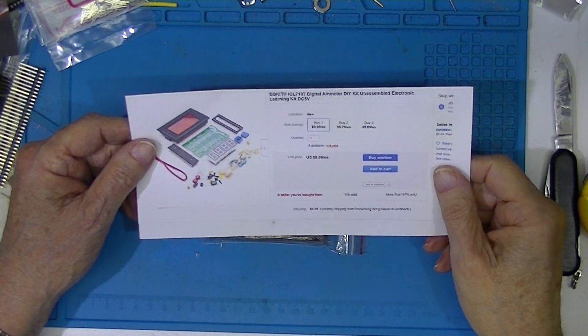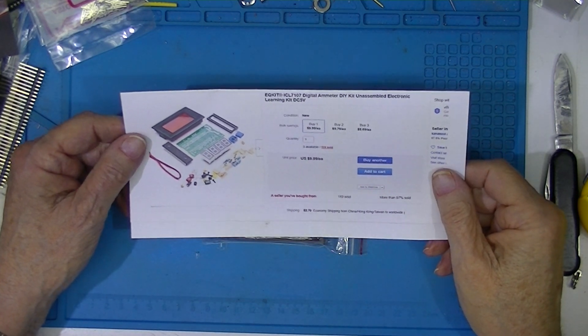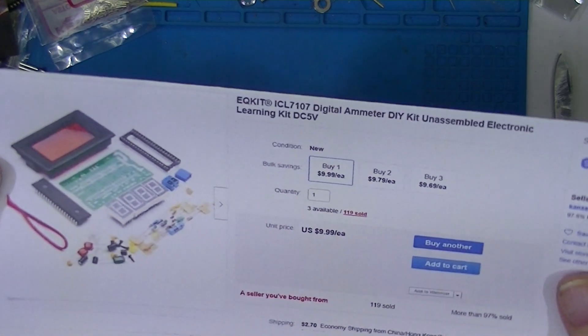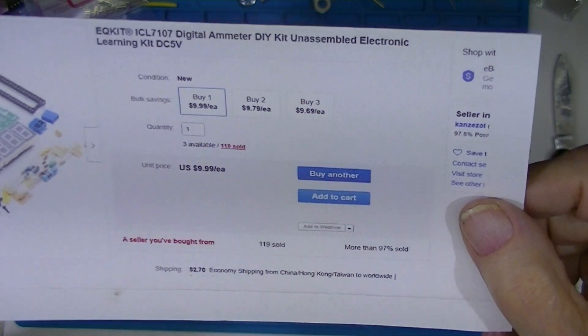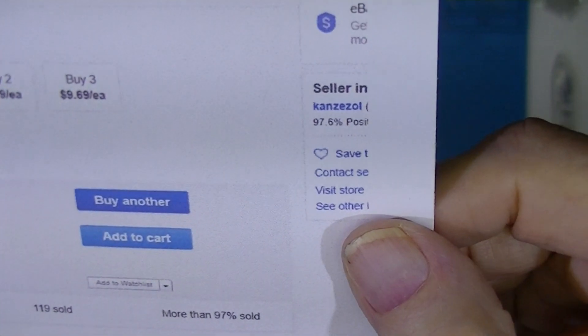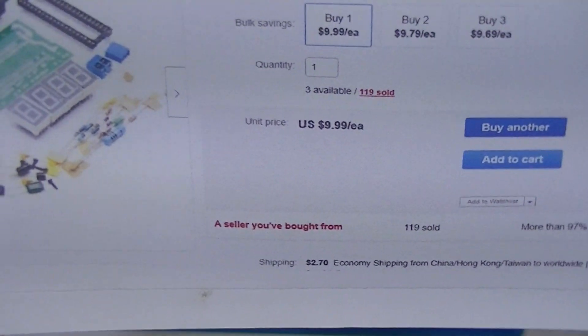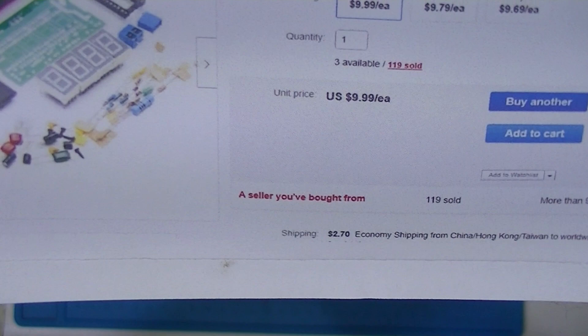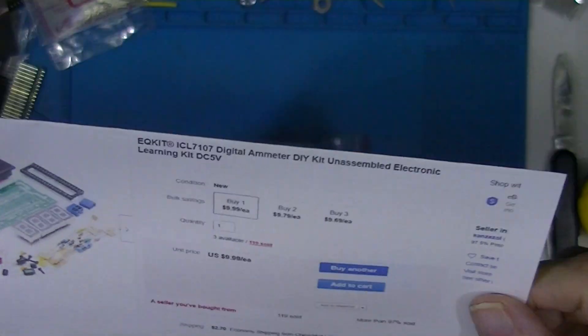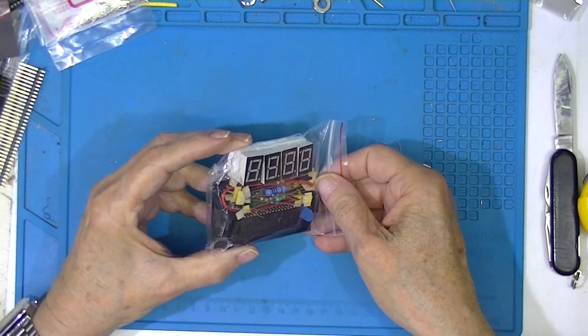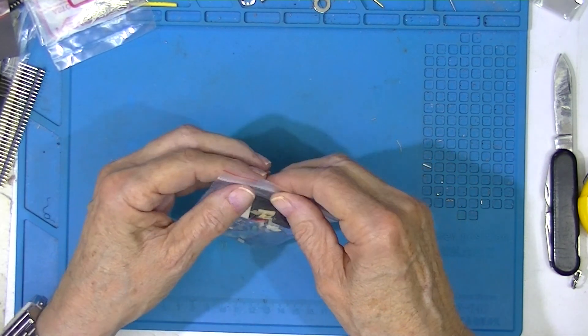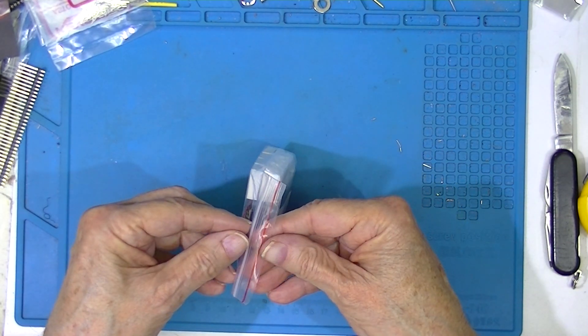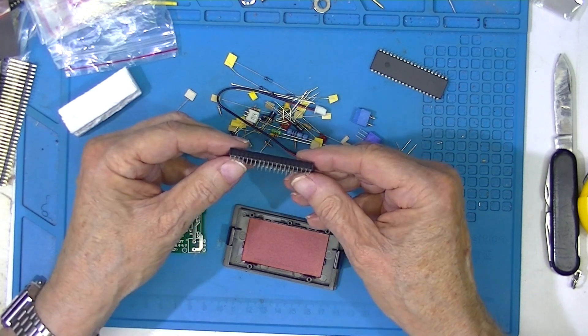I have this little ammeter kit that I purchased through eBay. It's not a cheap kit, it cost $13. It's what has become the average Chinese kit. There are no instructions, no schematic, but it has a nice low-profile socket.